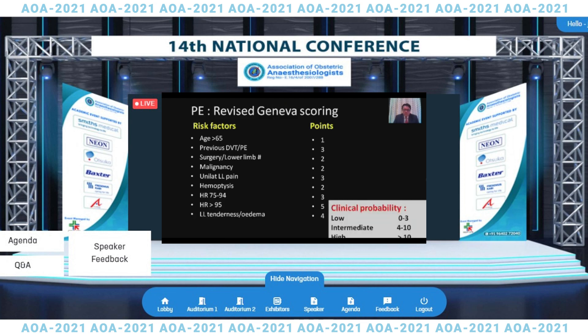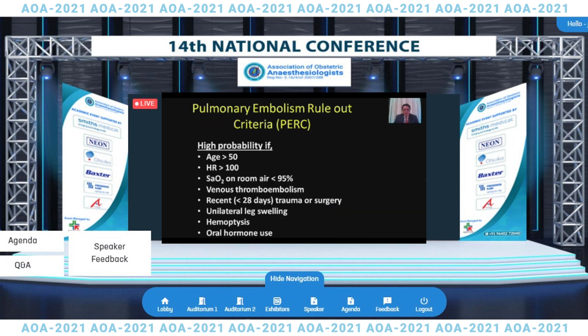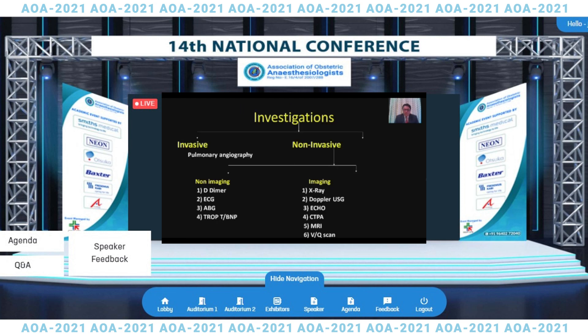There is also the Geneva scoring system where clinical probability of pulmonary embolism can be predicted, taking into consideration factors such as age, previous history, and surgery. Additionally, there is the pulmonary embolism rule-out criteria (PERC), which also takes multiple predisposing factors into consideration to predict the possibility of a thromboembolic event or pulmonary embolism.